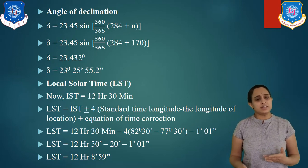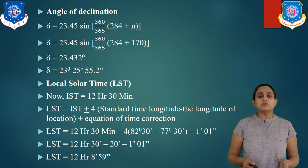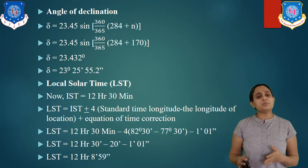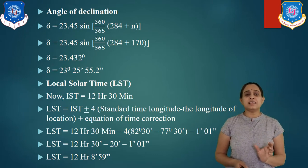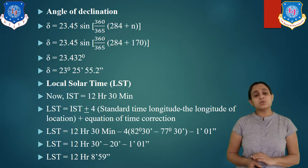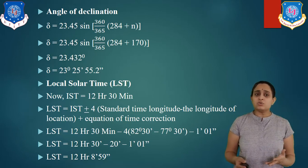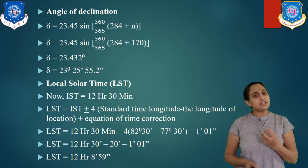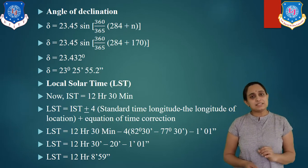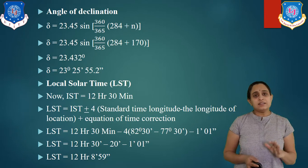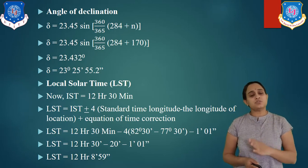Now, what is local solar time (LST)? The international standard time (IST) is given as 12 hours 30 minutes. The LST equation is: LST = IST ± 4 × (standard time longitude − longitude of location) + equation of time correction.